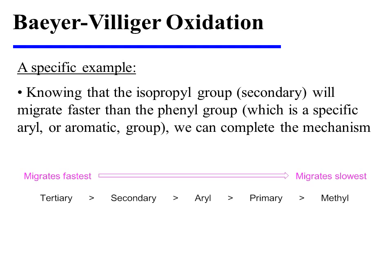In our specific example, we are choosing between the migration of an isopropyl group or a phenyl group. The isopropyl group is secondary, and the phenyl group is a specific example of an aryl or aromatic group. Knowing this, we can make the decision: the isopropyl group, which is secondary, will be the one to migrate, and now we can complete the mechanism.